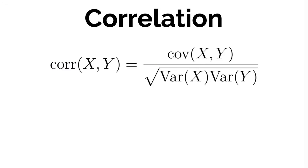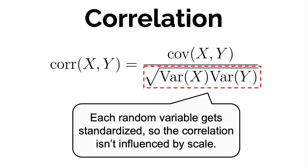What we do instead to measure the strength of the relation between two random variables is to calculate the correlation, which is defined as the covariance divided by the square root of the variance of the first random variable multiplied by the variance of the second random variable. What happens if we do that is that each random variable gets standardized so that the final correlation score doesn't get influenced by their scale.